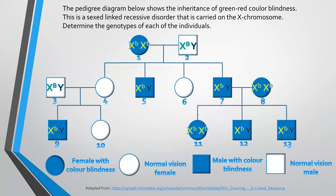At this point, the remaining individuals are those with normal vision — number four, six, and ten. We need to determine whether they are homozygous or heterozygous.